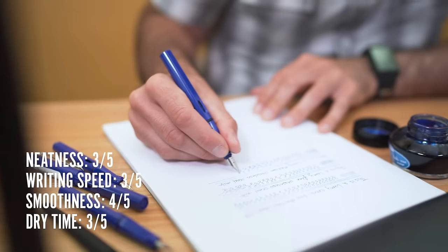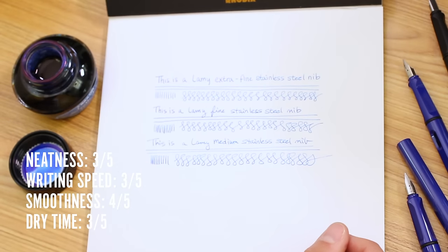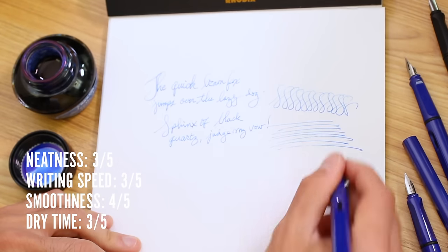Medium nibs are best suited for general purpose writing, signatures, and everything else in between. Medium nibs are not really suited for writing on cheaper quality paper or smaller handwriting.